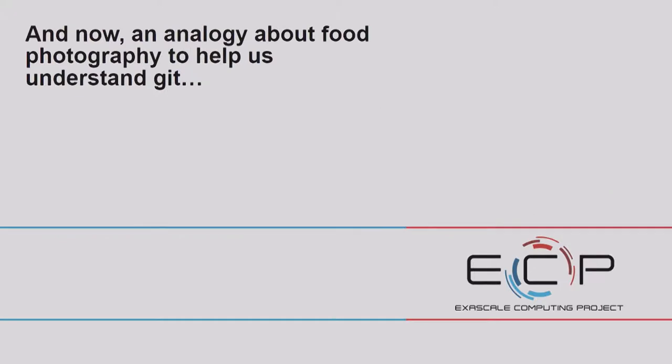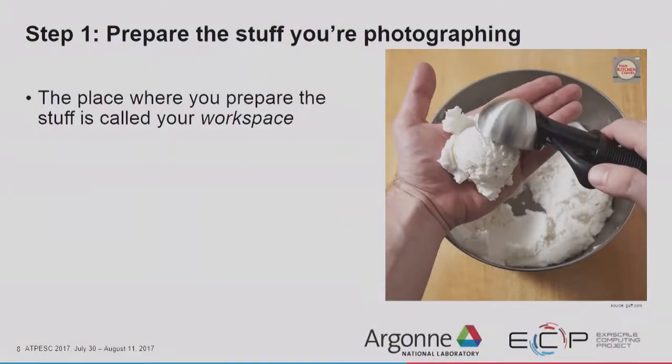Before we begin talking about Git, I'm going to use an analogy about food photography — the best type of photography — to help us understand Git. The things you photograph aren't usually what the food is supposed to be. If you see a picture of an ice cream sundae, that ice cream is usually mashed potatoes. The first step in food photography is you prepare the stuff you're photographing — in this case, mashed potato ice cream on our kitchen counter. That place where you prepare the stuff is called the workspace.